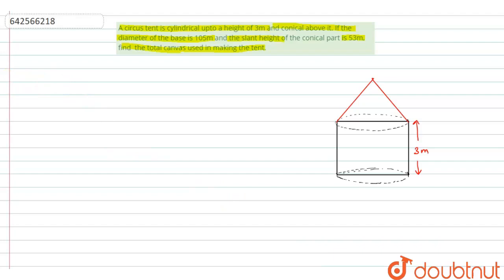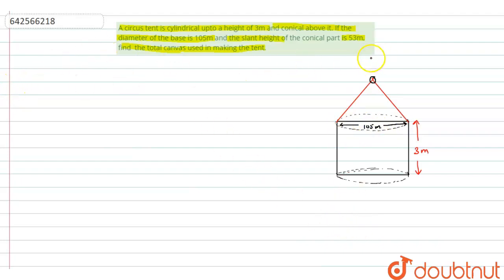This is the circus tent above the cylinder — it is cylindrical up to a height of 3 metres and conical above it. The diameter of the base is given as 105 metres, so this is marked as 105 metres. The slant height of the conical part is also given.